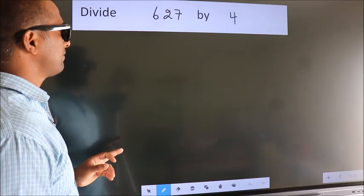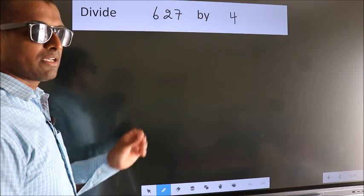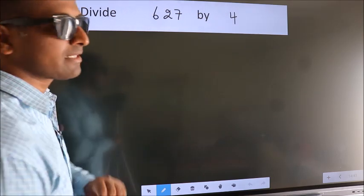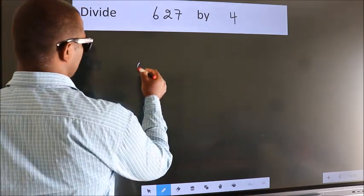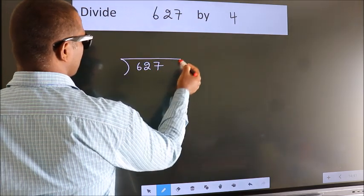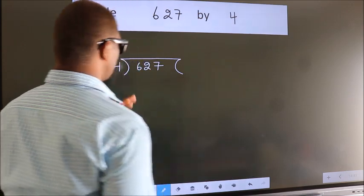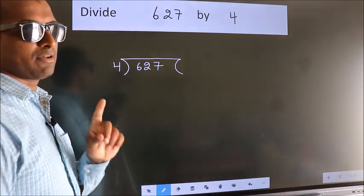Divide 627 by 4. To do this division, we should frame it in this way: 627 here, 4 here. This is step 1.